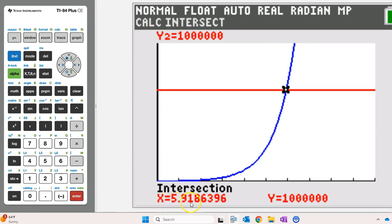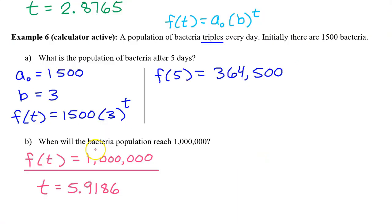And that's it: 5.9186. The bacteria population will reach 1 million after 5.9186 days.